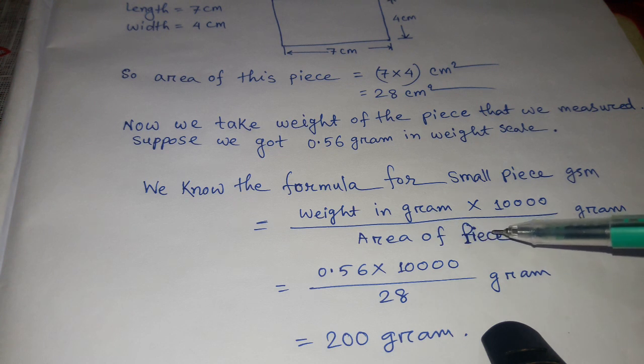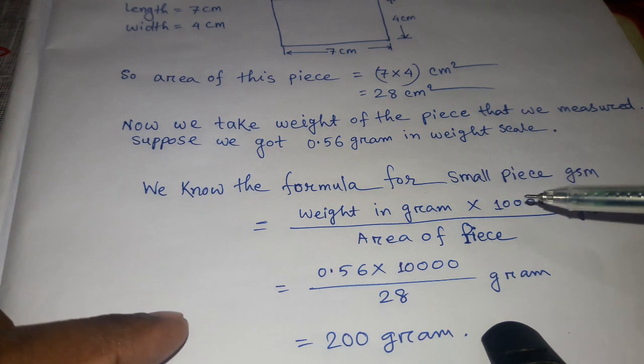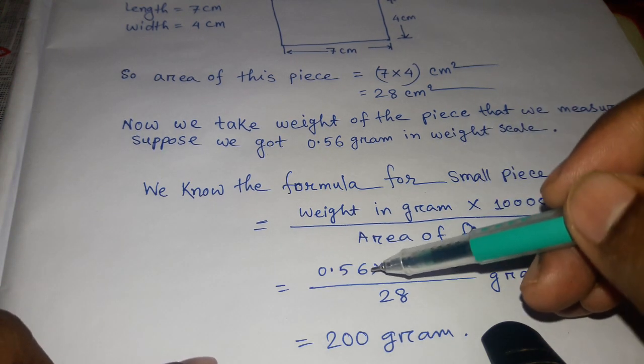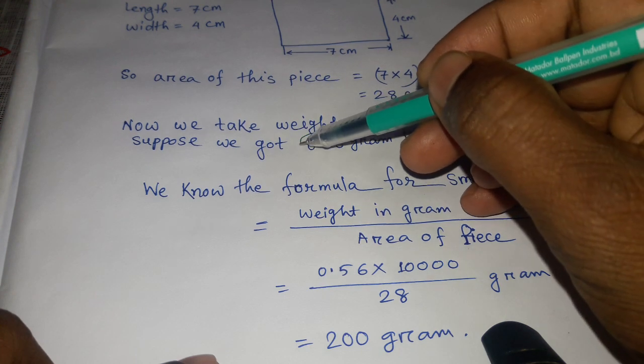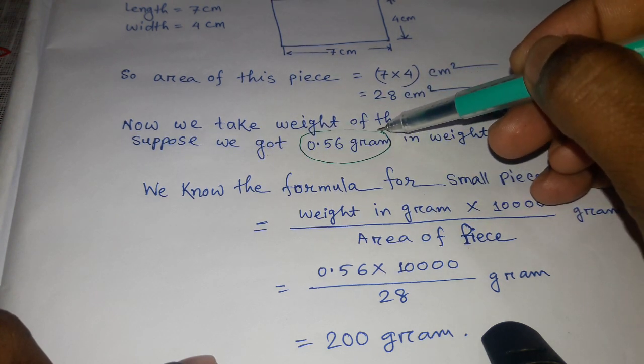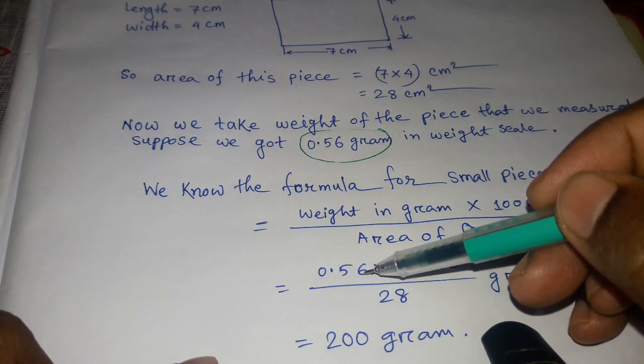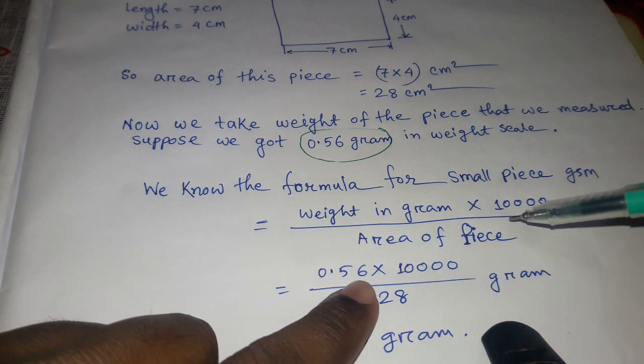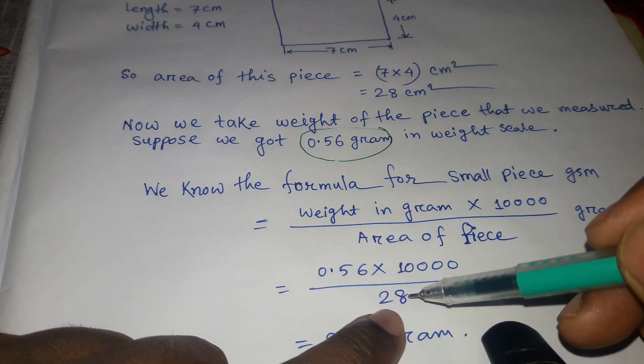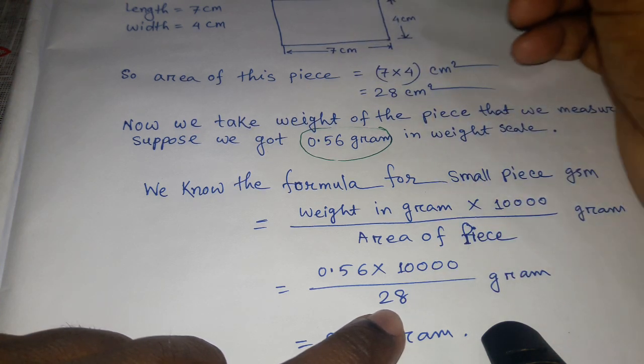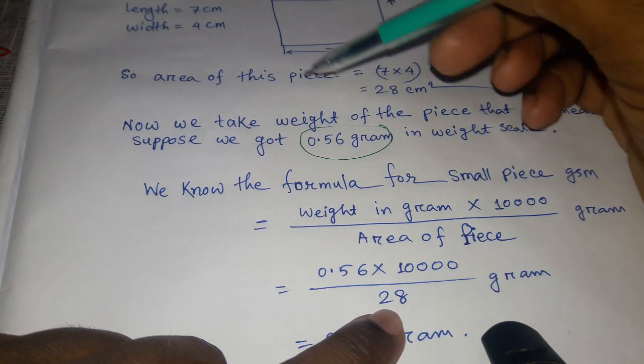by area of piece. Here we put in the values. The piece's weight is 0.56, multiply by 10,000, divided by the area of 28. This fabric piece area is 28 centimeters squared.